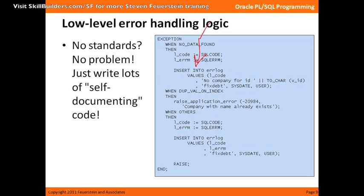If you get a DUP_VAL_ON_INDEX, that's more serious, and I need to raise a message back to the user saying the company already exists. So I use RAISE_APPLICATION_ERROR, put in my error number, and I'm done.